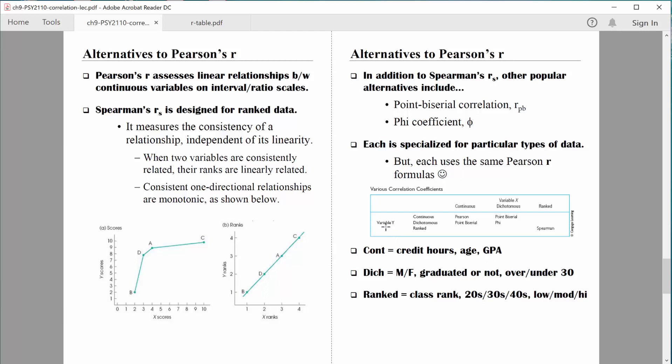So let's say we have one variable that's continuous. And then our second variable is continuous as well. Let's see where those converge. They converge right here on the Pearson correlation. Well, we knew that. That's what we just spent quite a bit of time practicing.